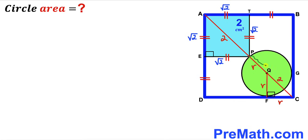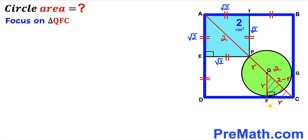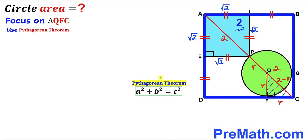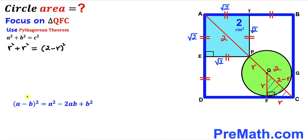We know the whole segment PC length is 2 and segment PQ length is lowercase r, so therefore segment QC is going to be 2 minus lowercase r. Now we are going to focus on this tiny right triangle QFC and apply the Pythagorean theorem to solve for radius r. Our hypotenuse is (2 minus r) whereas our two other legs are both lowercase r.